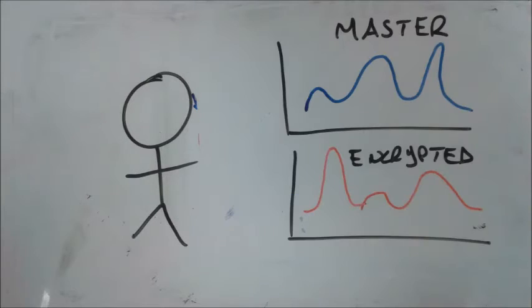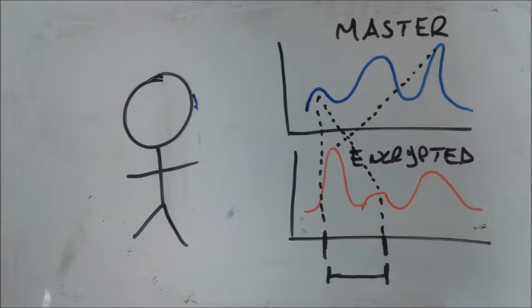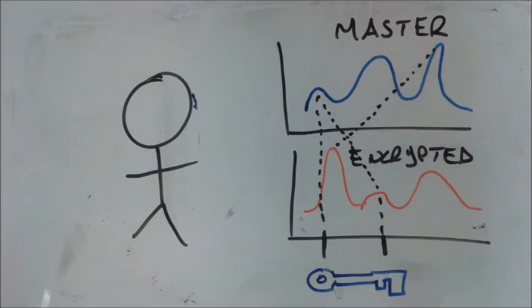Now why is that useful? Well, if we have our master distribution of relative frequencies of letters in the English language, and we have our encrypted text distribution of letters, we can start matching up point to point these distributions, which can tell us the exact key that was used to generate the encrypted message.